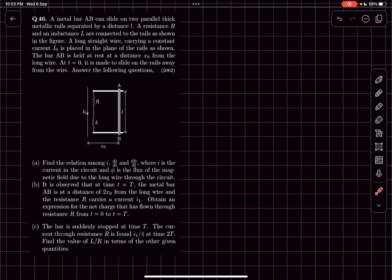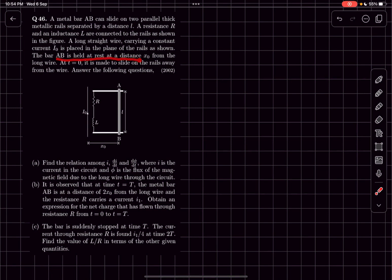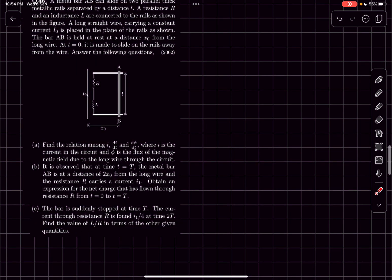We have a metal bar AB that can slide on two parallel thick metal rails separated by a distance l. We have a resistance R and an inductance L connected to the rails as shown in the figure. A long straight wire carrying a constant current i₀ is placed in the plane of the rails. The bar AB is held at rest at a distance x₀ from the long wire, and at t = 0 it is made to slide on the rails away from the wire. We have to find the relation among i, di/dt, and dΦ/dt — that is question (a).